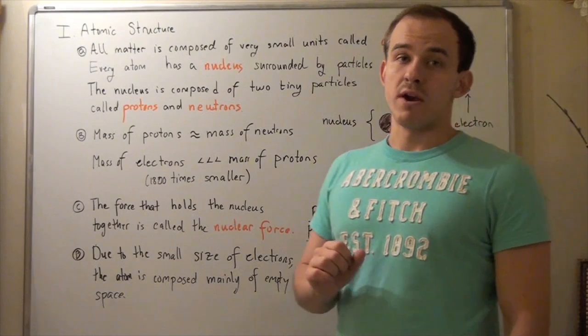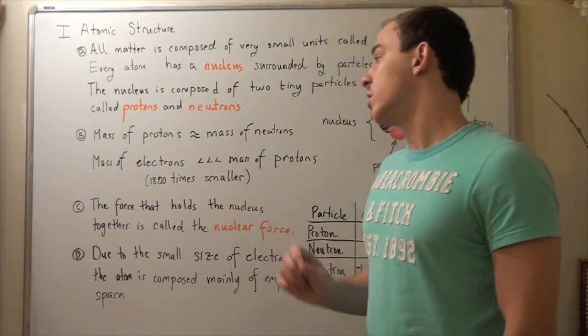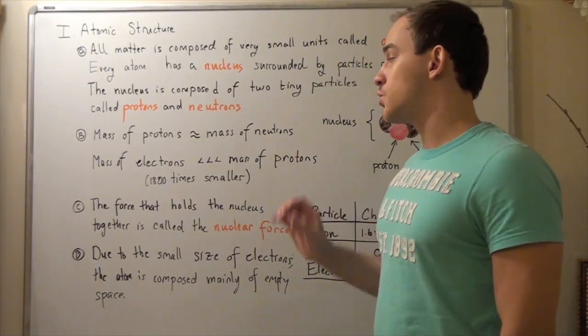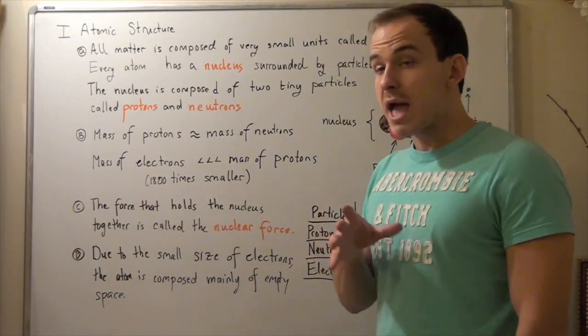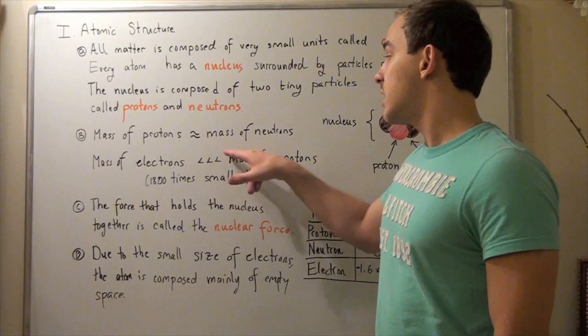Electrons, however, have a very small mass, much smaller than that of protons or neutrons. In fact, it's 1800 times smaller, the mass, than a proton or a neutron.